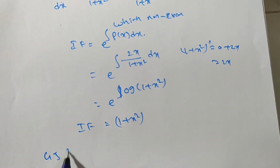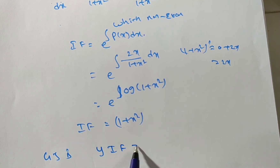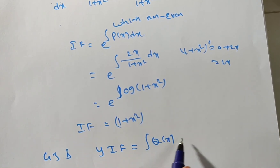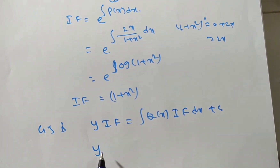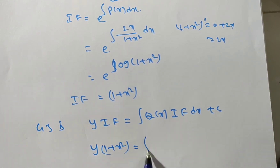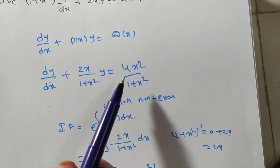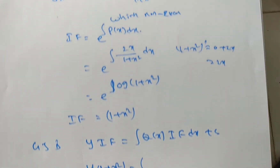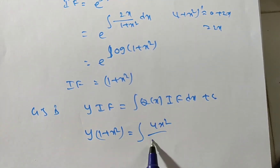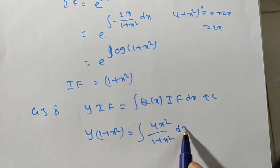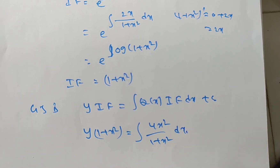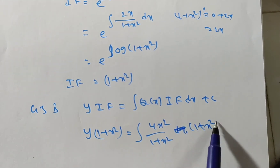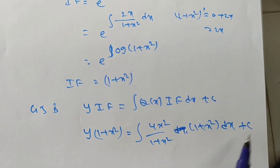The general solution is y × (integrating factor) = integral of Q(x) × (integrating factor) dx + c. So y × (1 + x²) = integral of Q(x), which is 4x²/(1 + x²), multiplied by the integrating factor (1 + x²) dx + c.